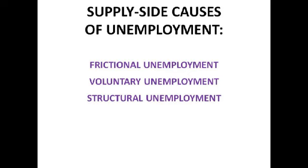Structural unemployment results from changes in the structure of the economy and leads to a lot of regional unemployment, because workers are occupationally and geographically immobile. For example, in mining towns like Mansfield, when Thatcher closed the mines, workers suffered really badly from regional unemployment — there was nowhere to work. They were occupationally immobile because no one needed miners, and geographically immobile because they couldn't afford to move to where the jobs were, like London. The government can help through occupational training and housing loans and grants, but this is very expensive.